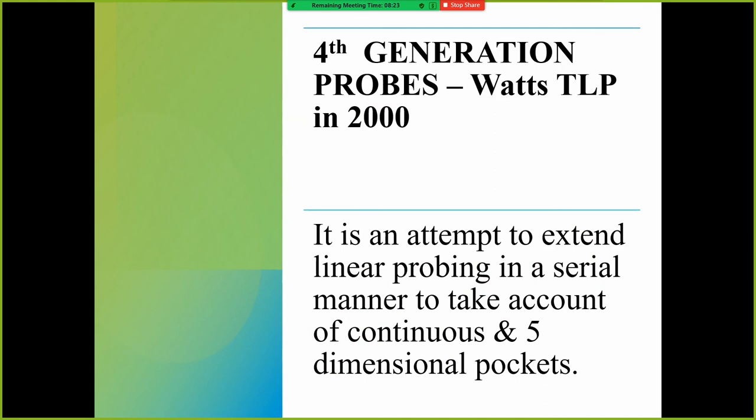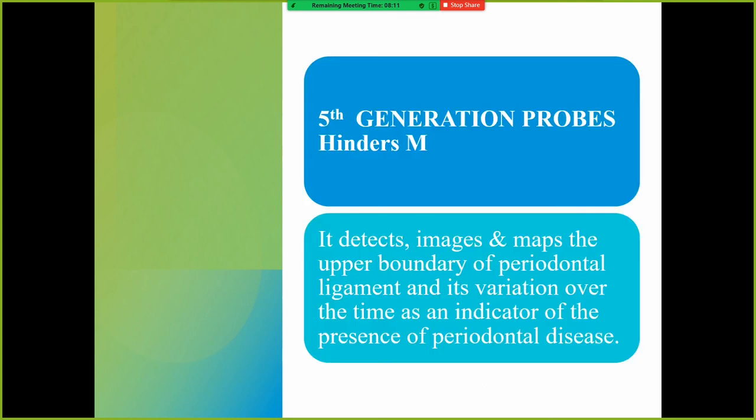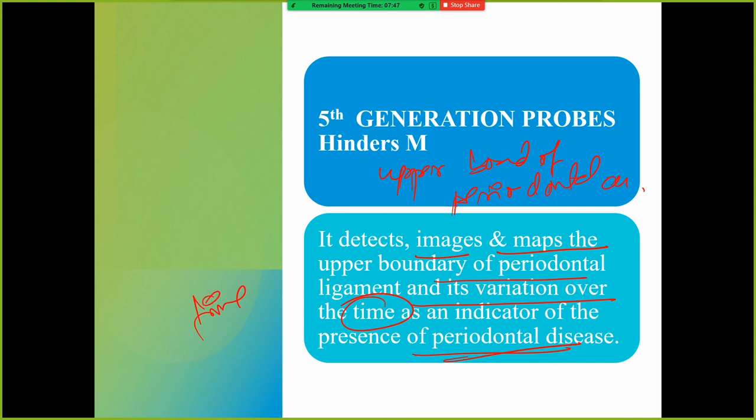Fourth and fifth generation probes: Fourth generation probe: 4th generation probe is 3D and under development. It is still under development. Then fifth generation: it detects images and maps the upper boundary of periodontal ligament and its variation over time. It detects the upper boundary of periodontal ligament and its variation over time as an indicator of periodontal disease. So this is time-bound, time-related. This was all about fifth generation probe.